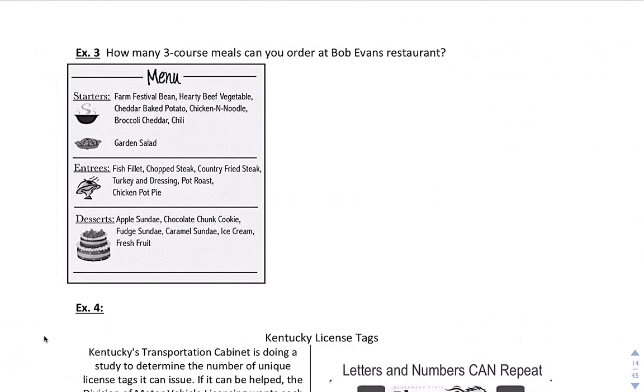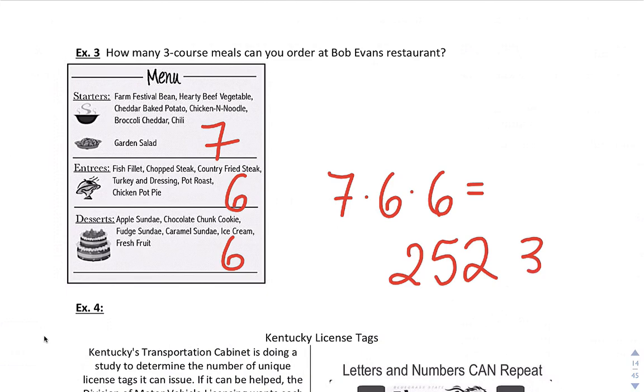Example three: How many three-course meals can you order at Bob Evans Restaurant? Here is the menu. So if we count the starters, it looks like there's seven starters, six entrees, looks like there's six desserts. The fundamental counting principle says you multiply them all, and we have 252 different three-course meals.